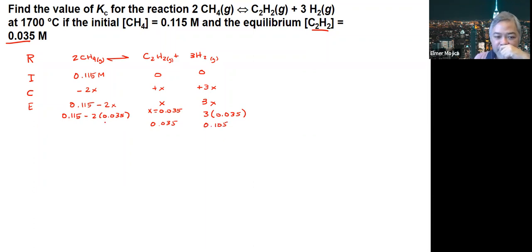And this one, 0.115 minus 0.070, so this is just 0.045. So these are the equilibrium concentrations.